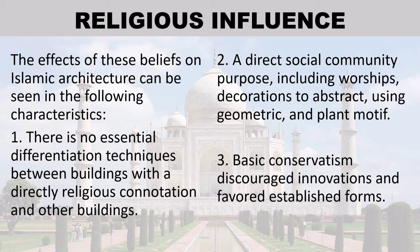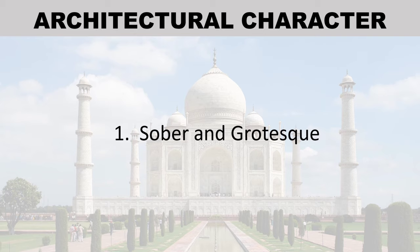Religious influence: The effects of beliefs on Islamic architecture can be seen in the following characteristics. There is no essential differentiation of techniques between buildings with a directly religious connotation and other buildings with a direct social or community purpose, including worship. Decoration is abstract, using geometric and plant motifs. Basic conservatism discourages innovation in favor of established forms. Architectural character is sober and grotesque.